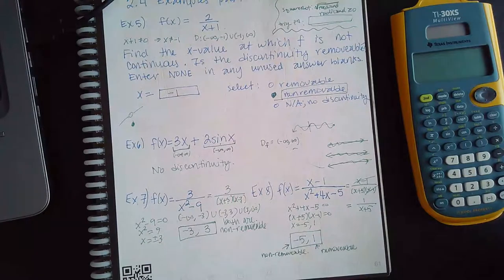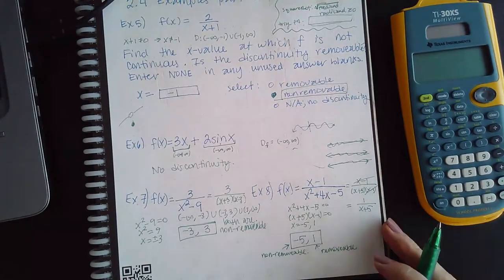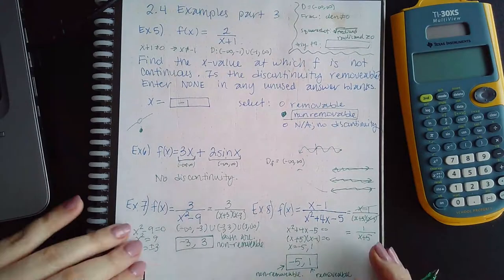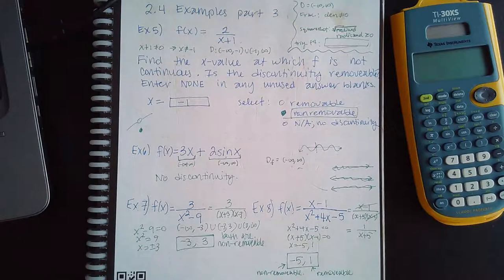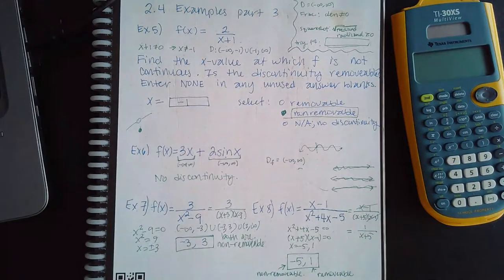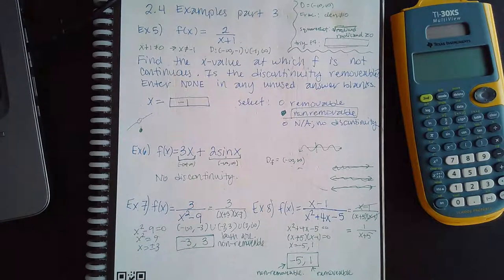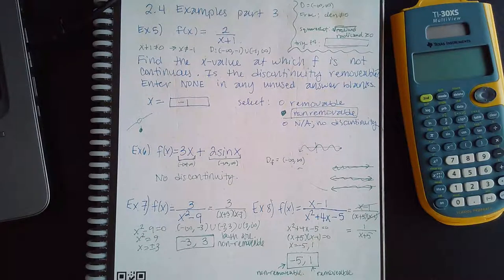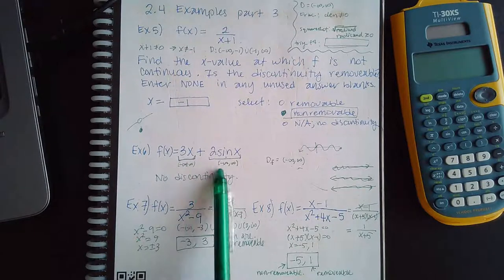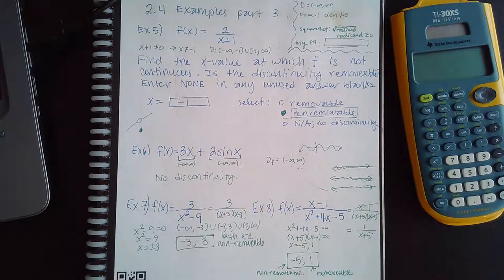To summarize the overall process: first consider the domain to find where discontinuities occur. Then determine whether the factor causing each discontinuity cancels — if it cancels, the discontinuity is removable; if it stays in the denominator creating an asymptote, it is non-removable. And if every piece of your function is continuous everywhere, there are no discontinuities at all.